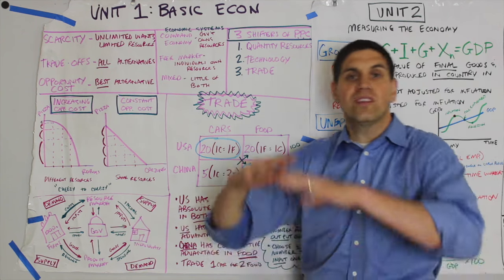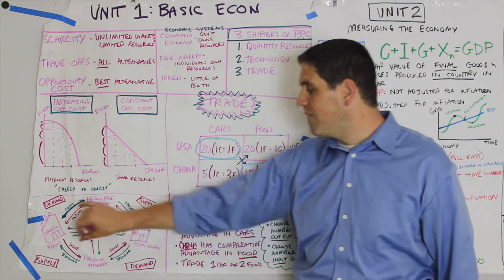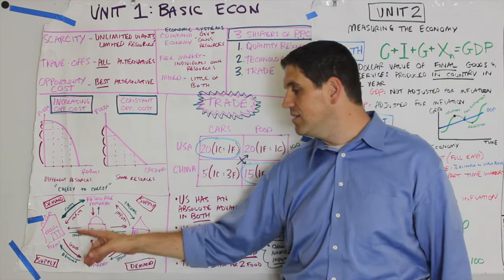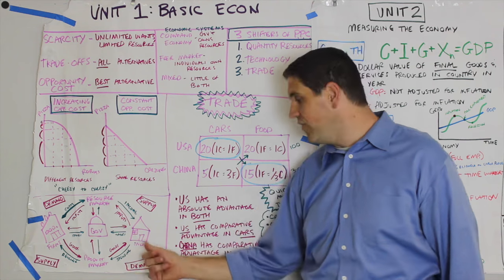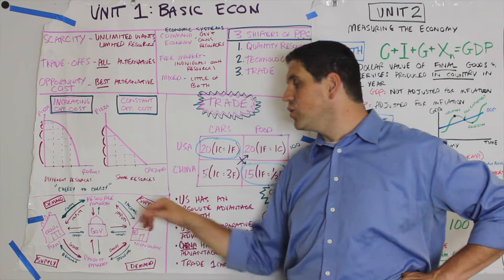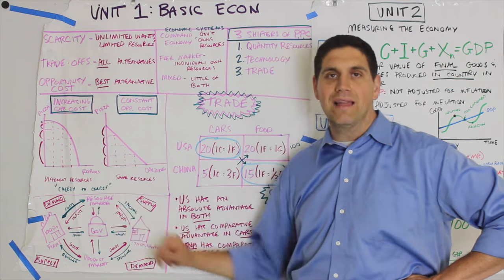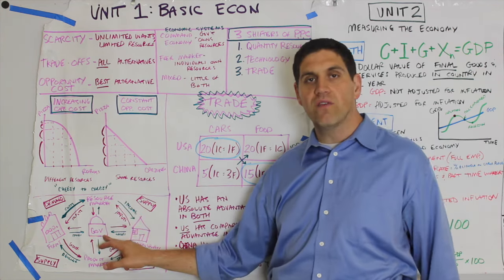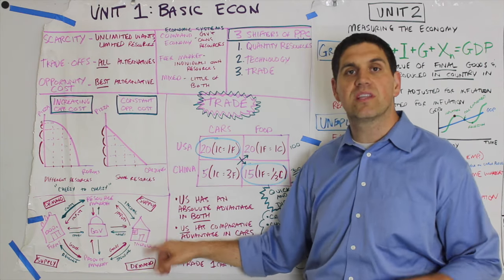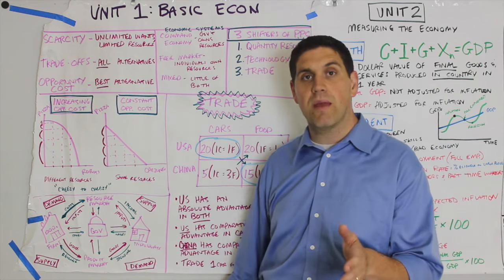Down here is the circular flow — the big picture of the entire economy. It has the product market and the resource market, with firms and individuals. Individuals buy goods and services from businesses in the product market, so individuals demand and businesses supply. In the resource market, individuals supply their land, labor, and capital, and businesses demand that land, labor, and capital. Also remember the government is involved, and one of the things they do is called transfer payments — direct payments to individuals. This is a form of welfare when the government gives money straight to people.